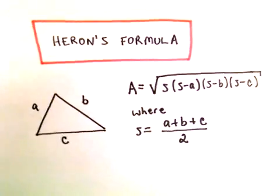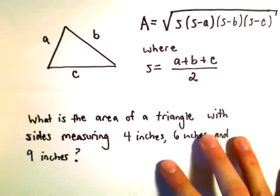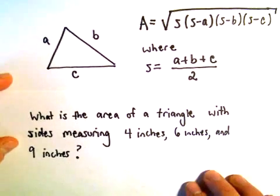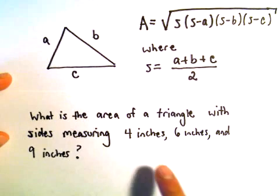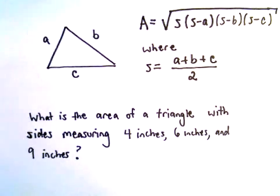So let's do a little simple example here, just illustrating this. We want to know what's the area of a triangle with sides measuring 4 inches, 6 inches, and 9 inches.